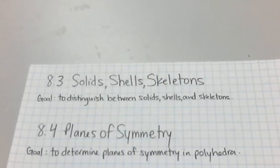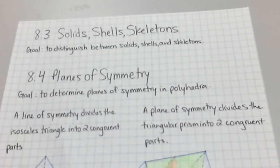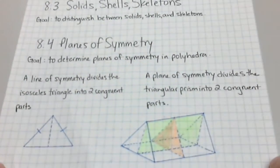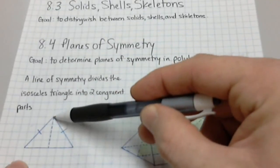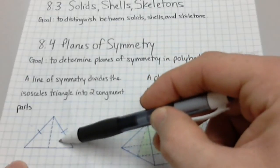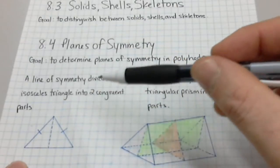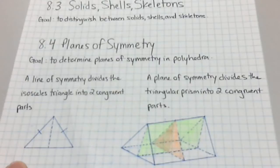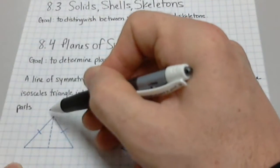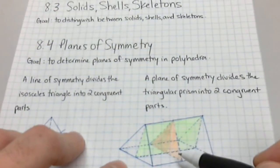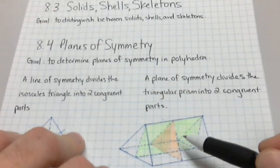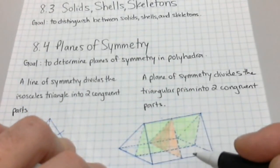Planes of symmetry are like lines of symmetry, except that you apply them to a three-dimensional shape. So a line of symmetry — if you look at this isosceles triangle — this dotted line divides the isosceles triangle into two congruent parts. So if I were to cut this out and cut along this line of symmetry, I would have created two identical triangles. A plane of symmetry divides a three-dimensional shape into two equal shapes.